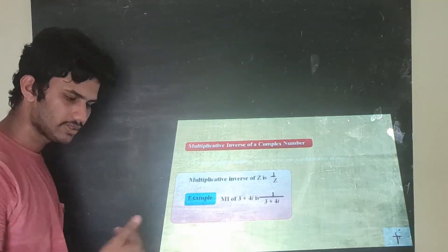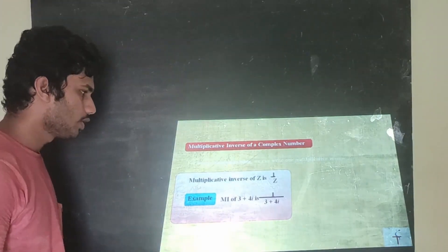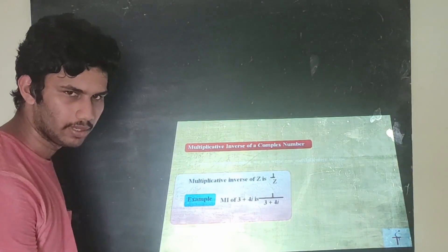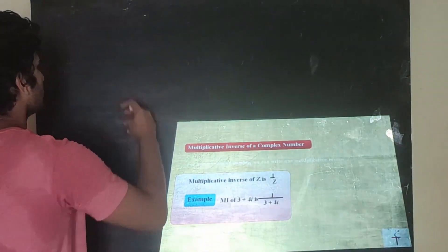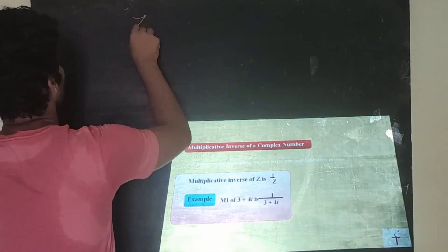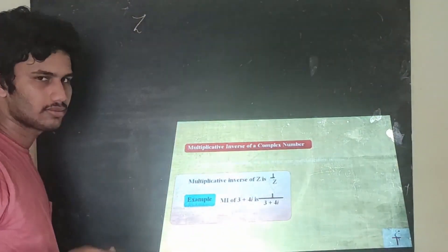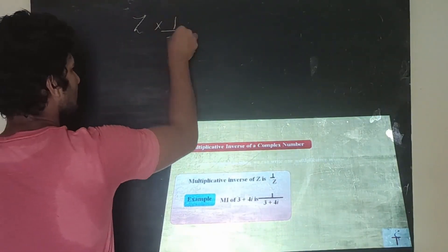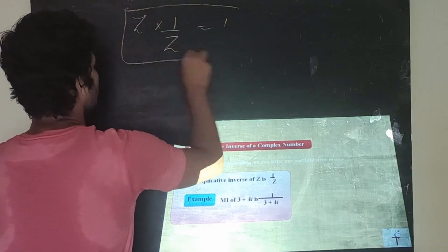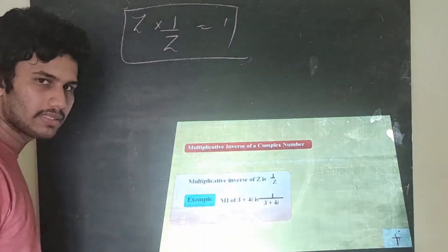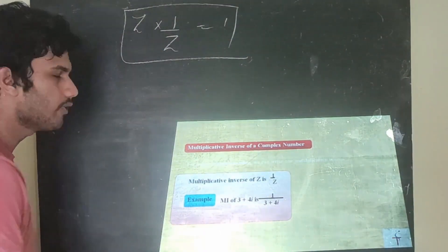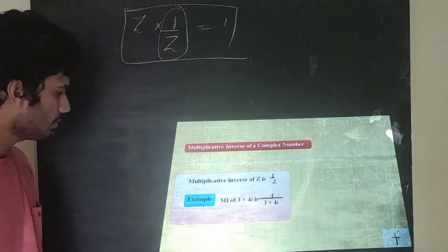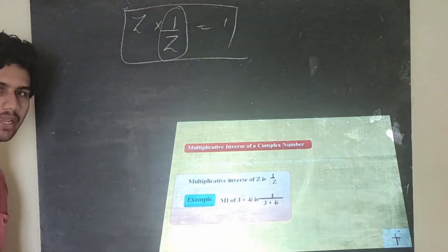We discussed additive inverse; similarly there is a multiplicative inverse. The multiplicative inverse of z is the number you multiply with z to get 1. So the multiplicative inverse of z = a + ib is 1/z — the reciprocal.